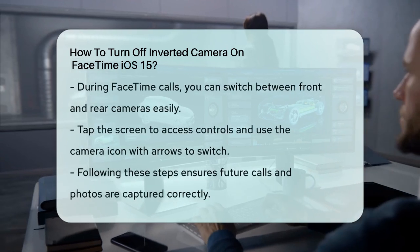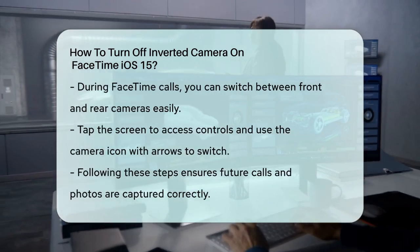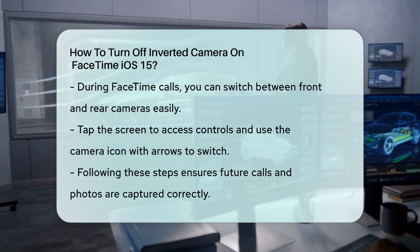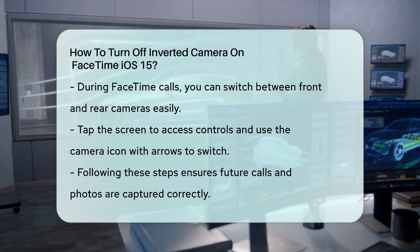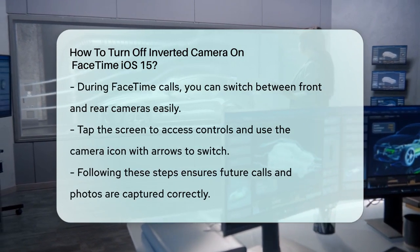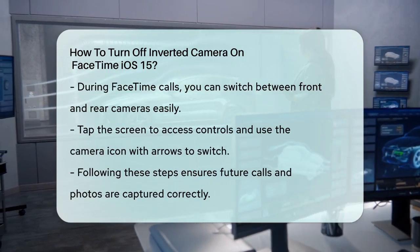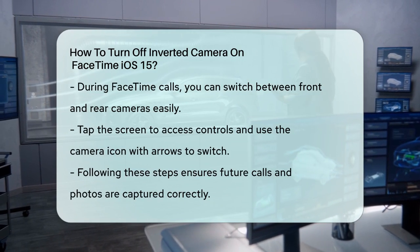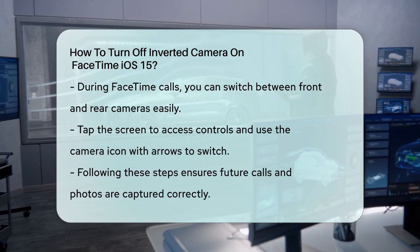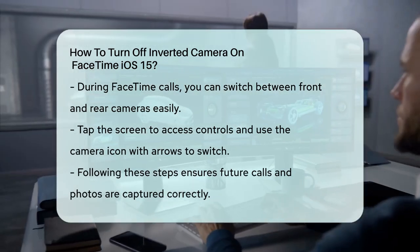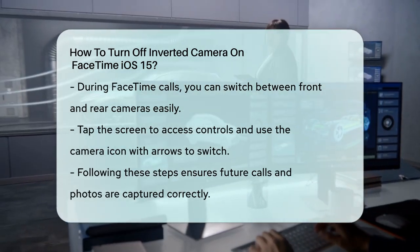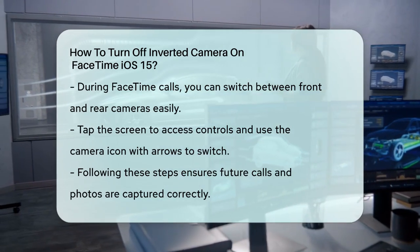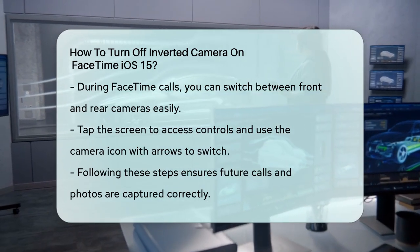During a FaceTime call, if you need to switch between the front and rear cameras, you can do so easily. Tap the screen to bring up the controls, then tap the camera icon with the two arrows to switch between the front and rear cameras. This won't change the inversion setting, but it's handy to know if you need to switch cameras during a call.